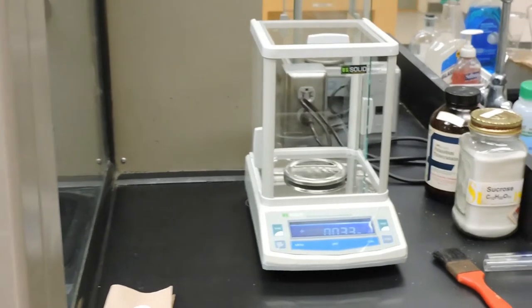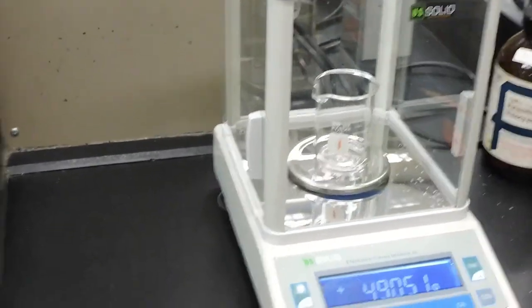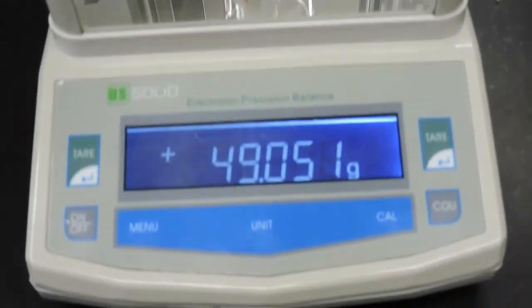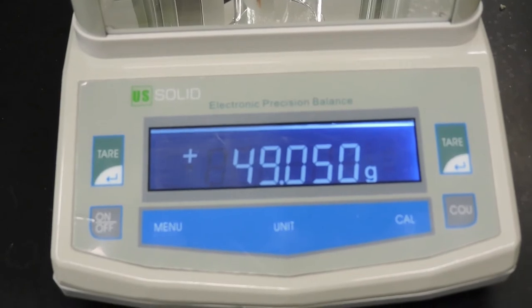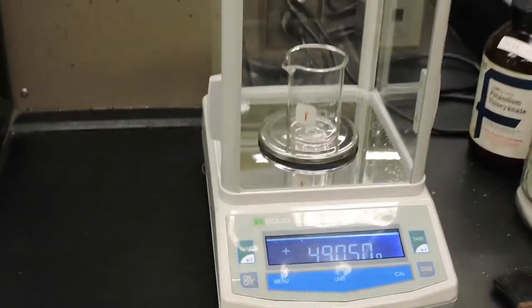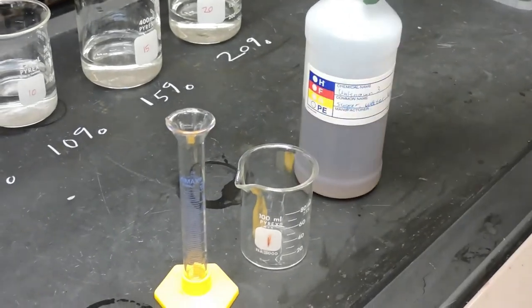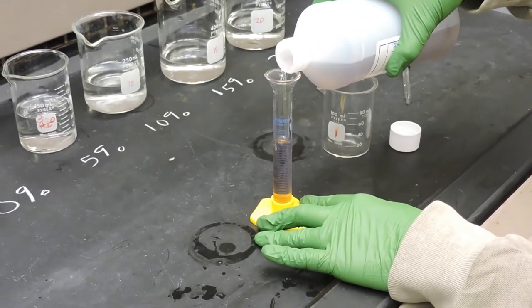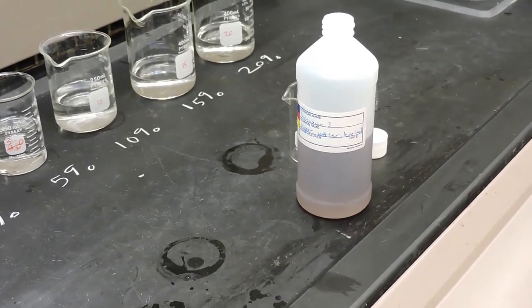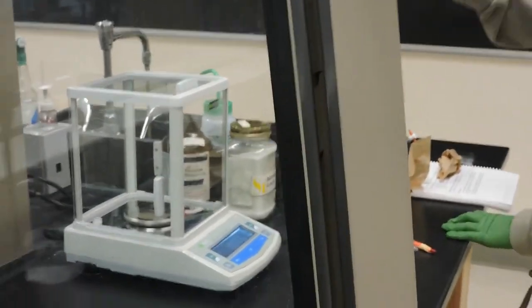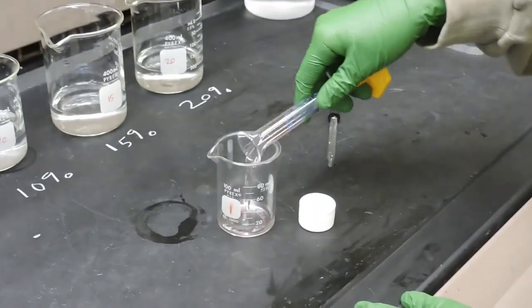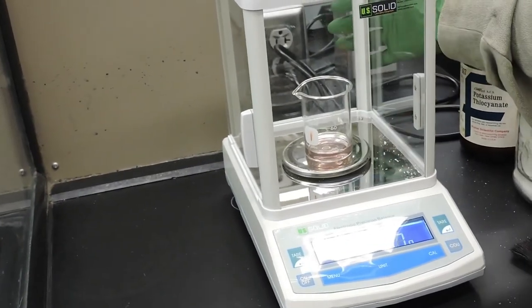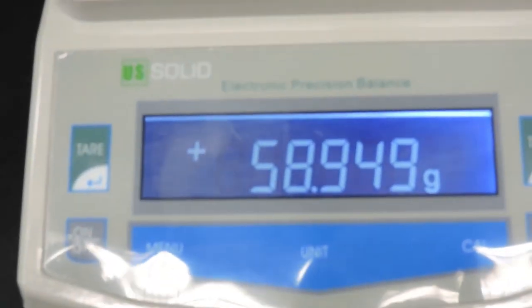The final soft drink is the unknown solution. So we'll find the mass of 10 milliliters by first pre-weighing the beaker again. The mass is 49.051 grams. And then we will add 10 milliliters of our unknown, unknown number three. Now with 10 milliliters of that unknown in the beaker, we'll find its mass again. And that is 58.949 grams.